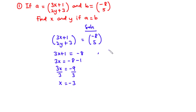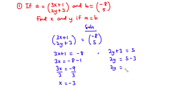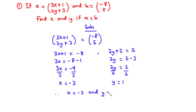For Y, we have 2y + 3 = 5. We transpose 3 to the right-hand side: 2y = 5 - 3, so 2y = 2. Dividing through by 2, we have y = 1. Therefore, x = -3 and y = 1. These are the values of X and Y.